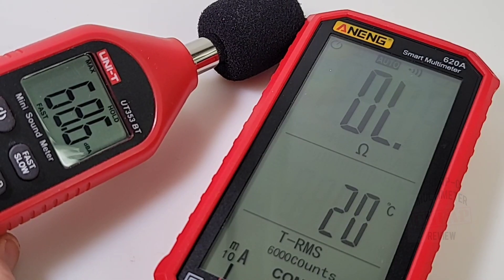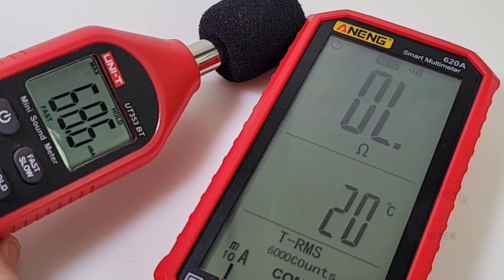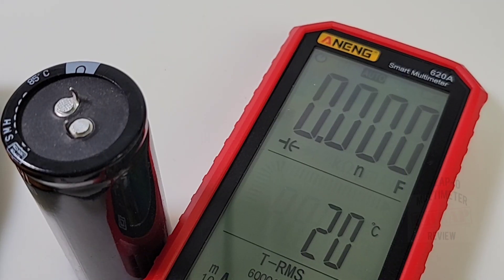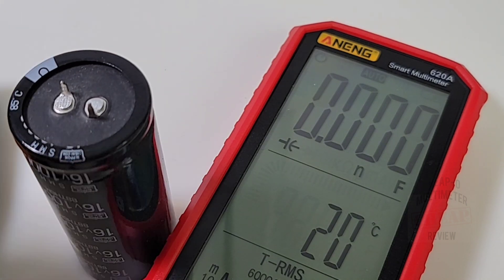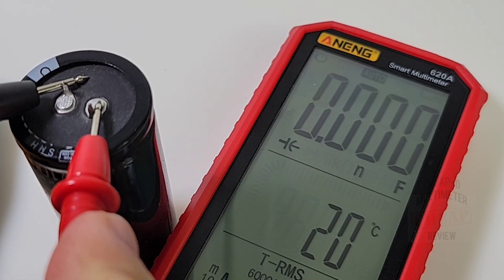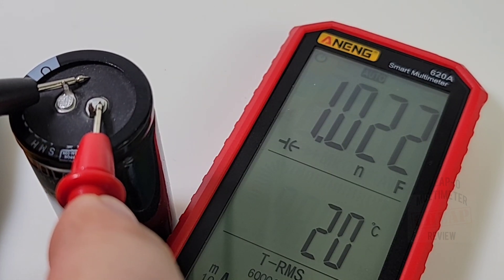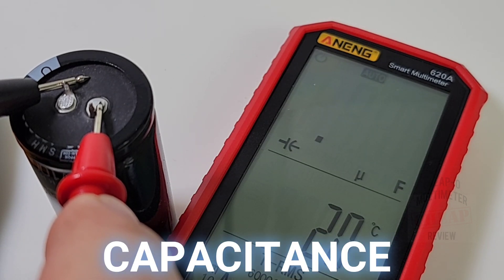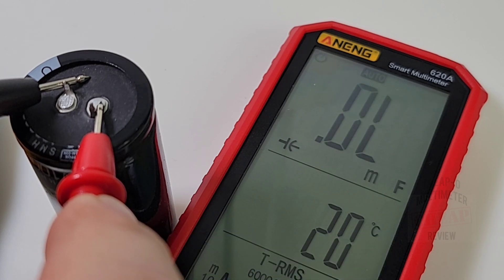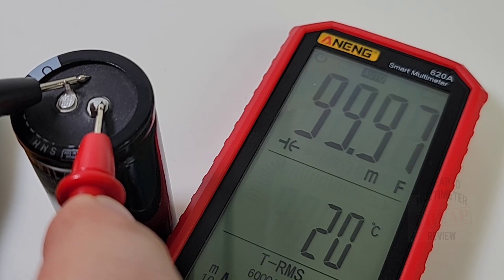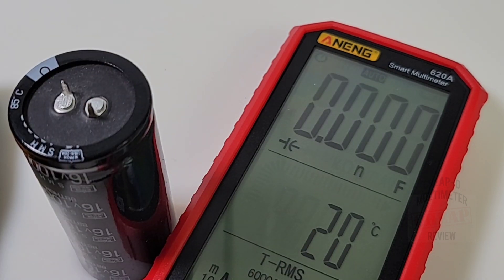60.6 decibels maximum output, actually not that loud. Capacitance mode is next. They are claiming 60 millifarad is the capacitance maximum for the ANENG 628. Let's see if we can do a little bit better, sitting here with a 100 millifarad capacitor. Here we go, it's thinking.